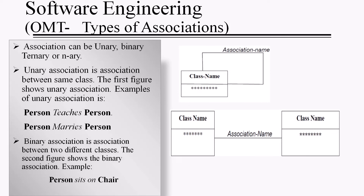Association can be unary, binary, ternary, or N-ary. Unary association is an association between the same class — for example, Person-marriage-Person. Binary association is the association between two different classes. For example, Person sits on Chair — Person and Chair are two different classes, and 'sits on' is the association name. This is an example of binary association.